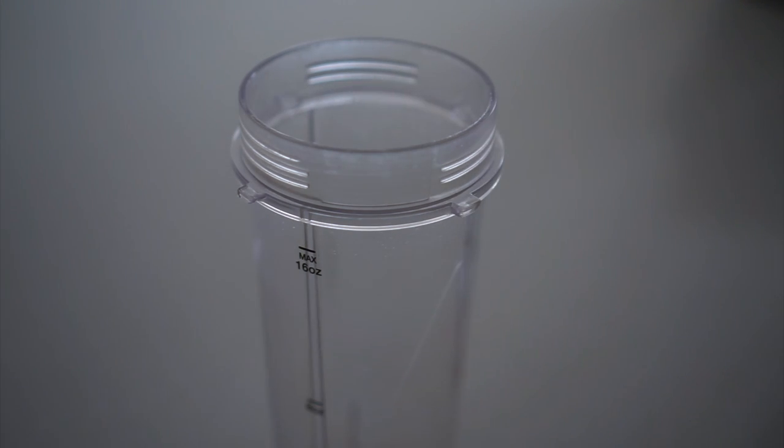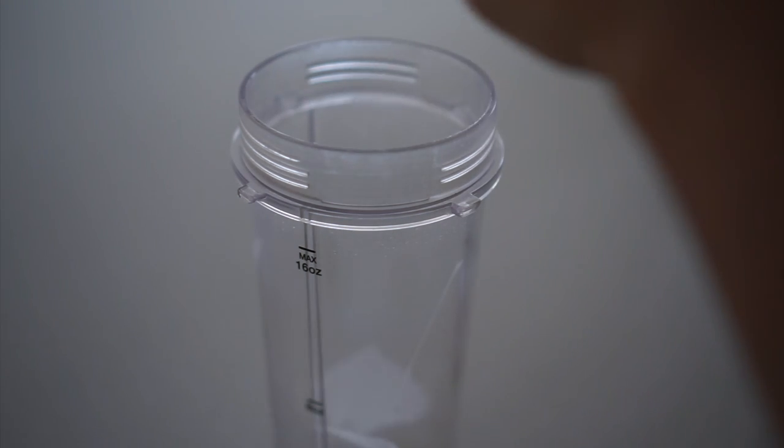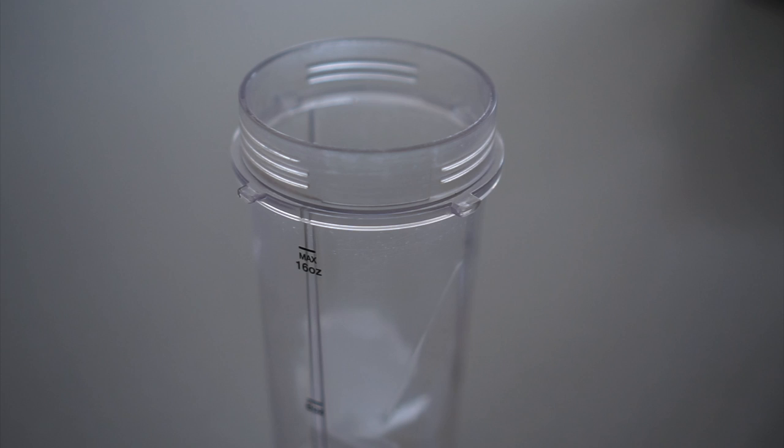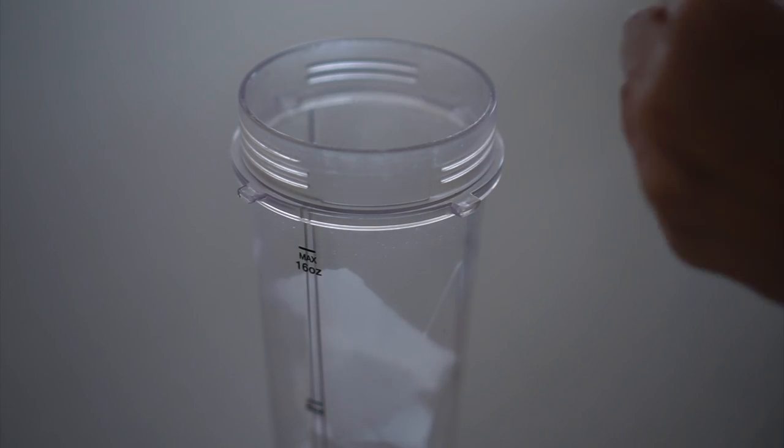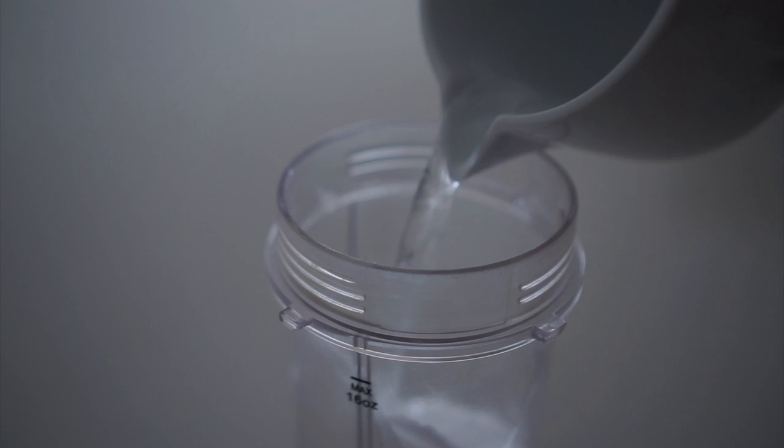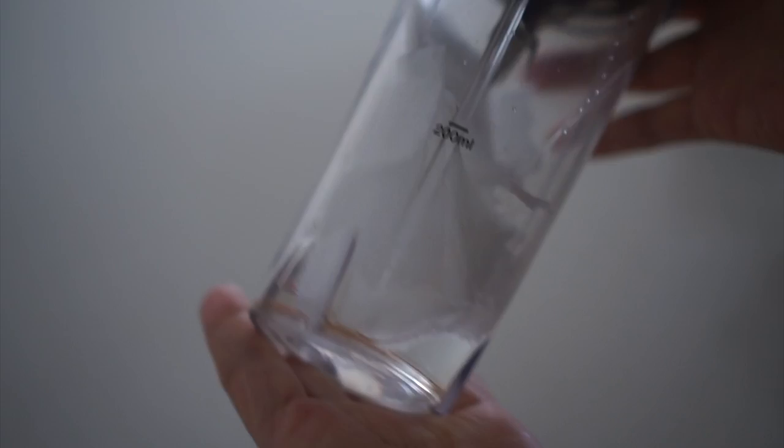For the white swan cake, I use a wafer paper technique called wafer paper lace to create a delicate lace effect that represents the swan's feathers and wings. This technique is an excellent way to add intricate details to your cake.